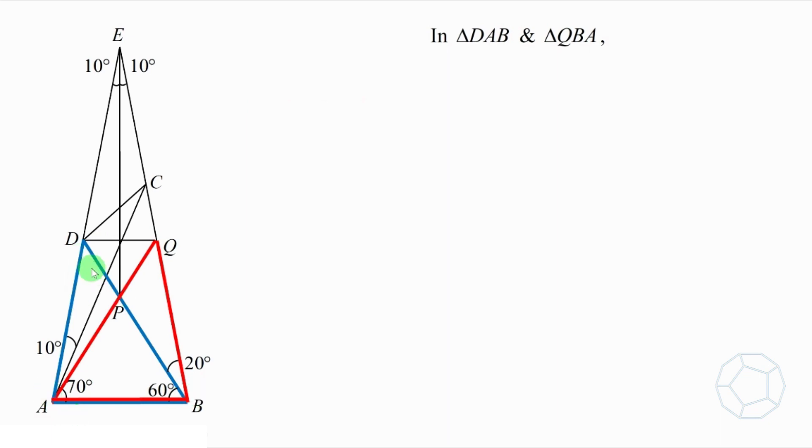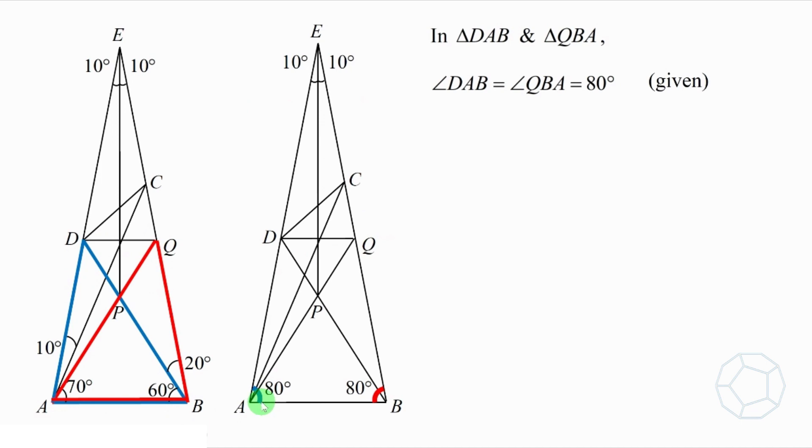The blue triangle DAB and the red triangle QBA. First of all, angle DAB and angle QBA both are 80 degrees. This is a given condition. Next, AB is the common side of the two triangles. Finally, angle DBA and angle QAB both are 60 degrees. This is proved in part 1.